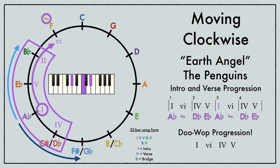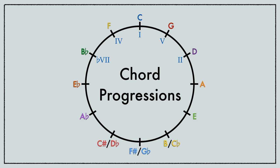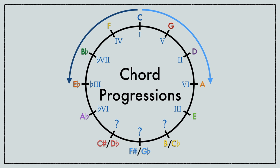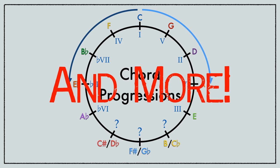1, 6, 4, 5. Now that I've shown you how to use the circle of fifths for chord progressions, keep going by adding flat 3, major 6, and more!